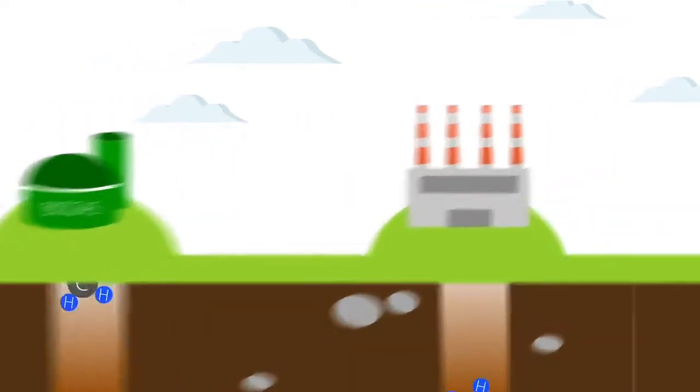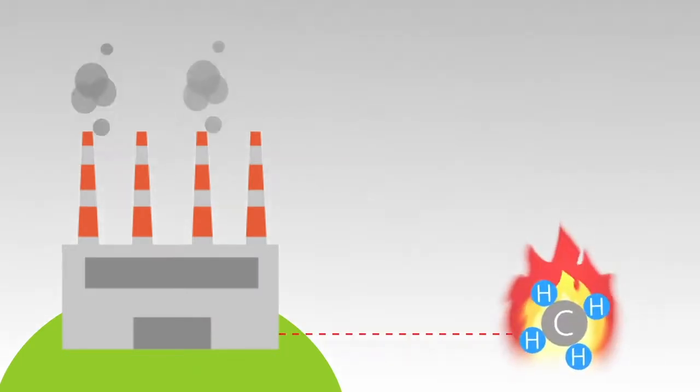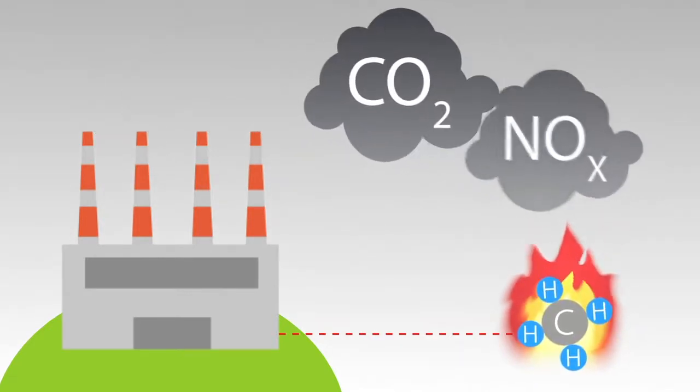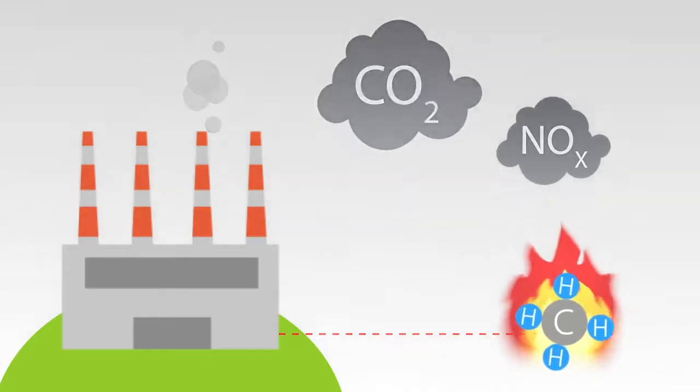Methane is an important energy source for generating heat and power. But burning methane produces large amounts of greenhouse gases, such as CO2 or nitrogen oxides, that are harmful to the climate.